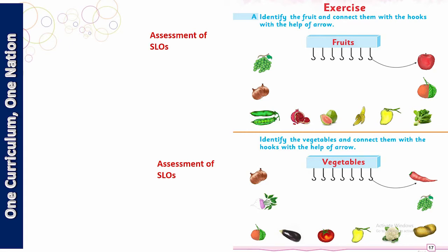Cleanliness of food is very much important — humne yeh bhi dekha. Now we are going towards the exercise, aur mujhe yaqeen hai ke mere pyare bachche exercise khud karenge — yeh bahut aasan hai. Coming towards the first activity: identify the fruits and connect them with the hooks with the help of an arrow. Neeche pyare bachon, kuch pictures diye hue hain, un mein se aap ne fruits upar yahaan lagane hain. The first one is done for you.